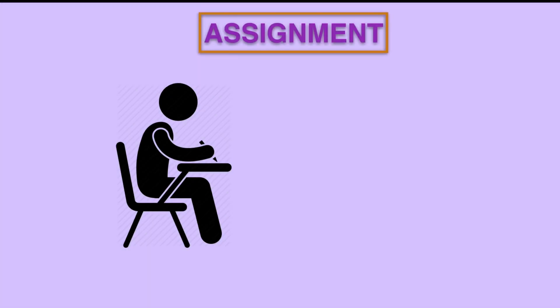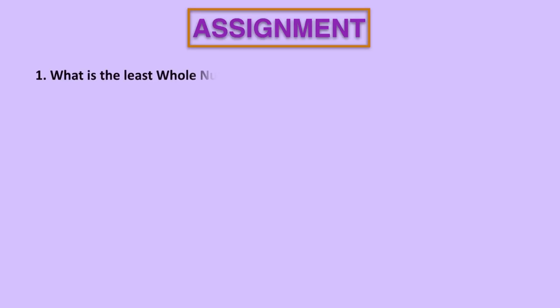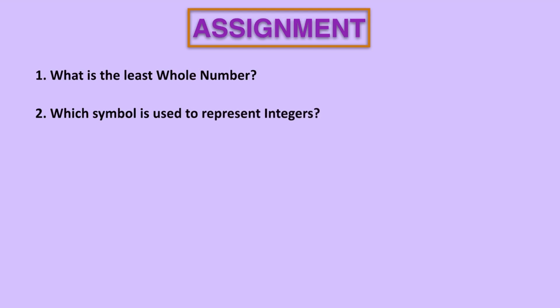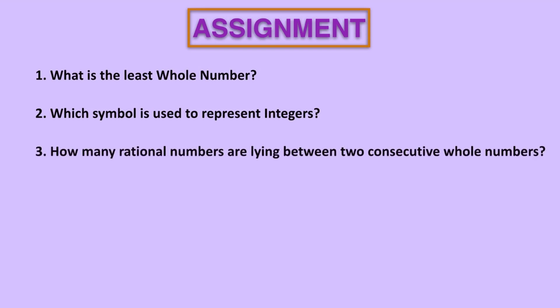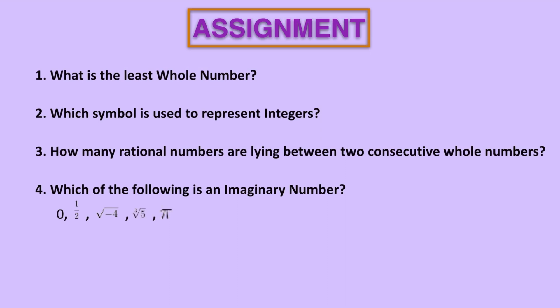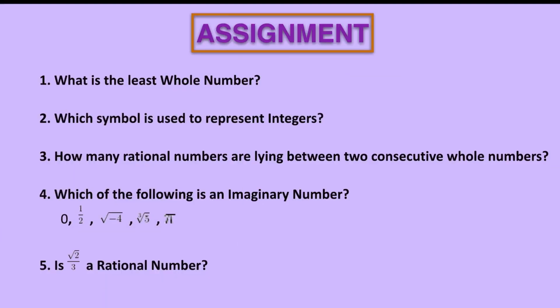I hope you understood about number system. Dear students, I will give you one assignment — write your answers in the comment section. First question: What is the least whole number? Second question: Which symbol is used to represent integers? Third question: How many rational numbers are lying between two consecutive whole numbers? Fourth question: Which of the following is an imaginary number? Zero, 1/2, √(−4), ∛5, pi. Fifth question: Is √2/3 a rational number? I hope you understood the concept. Thank you very much for watching.